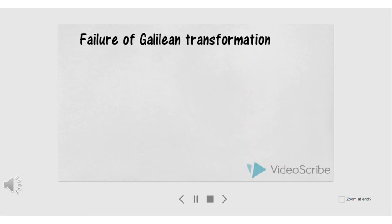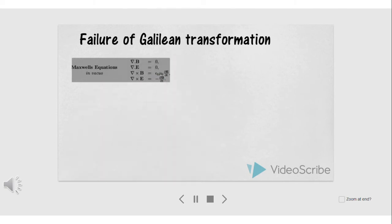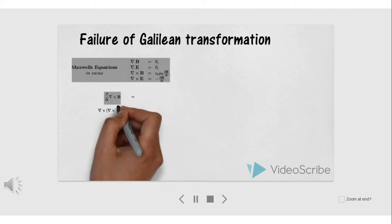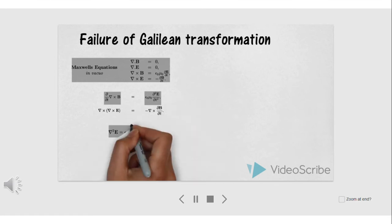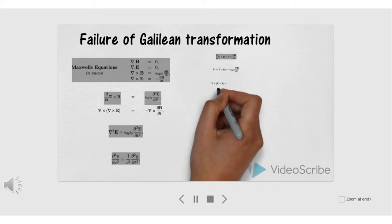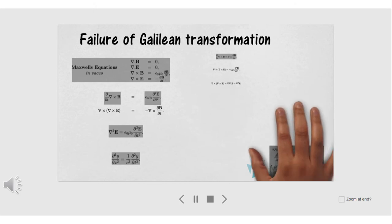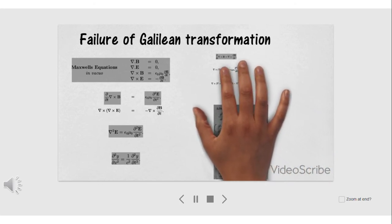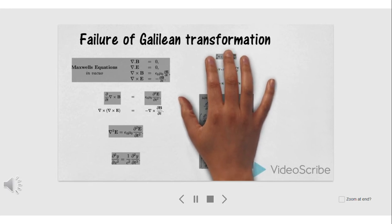So far, so good. But as we move to the electromagnetic domain, problems arise with the Galilean transformation. We know that the Maxwell equations are rock-solid equations of electromagnetism, and from the Maxwell equations we can derive the wave equation of electromagnetism. Let's check if the Maxwell equations are invariant under the Galilean transformation.